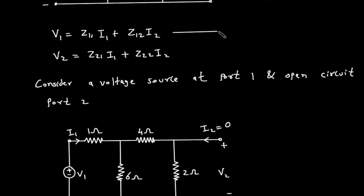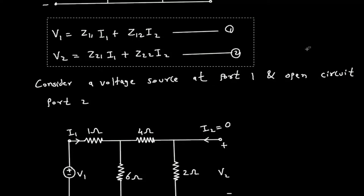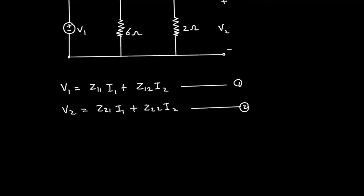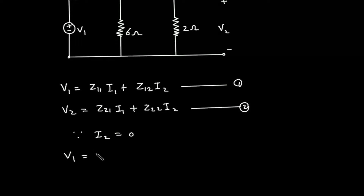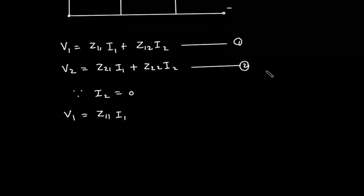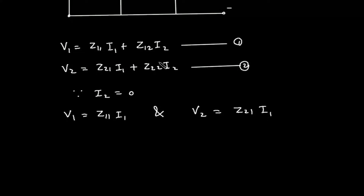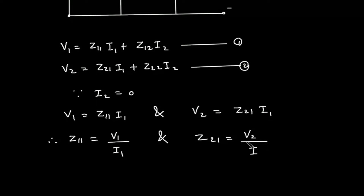In equation 1 and equation 2, we set I2 = 0. Since I2 = 0, V1 = Z11·I1 and V2 = Z21·I1 — the Z12·I2 and Z22·I2 terms become zero. Therefore Z11 = V1/I1, and Z21 = V2/I1.